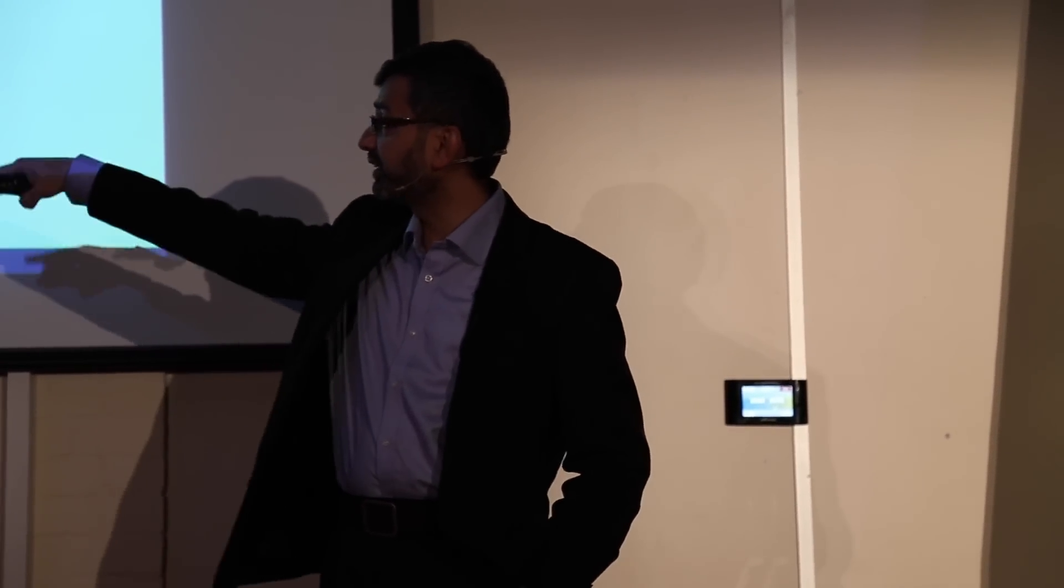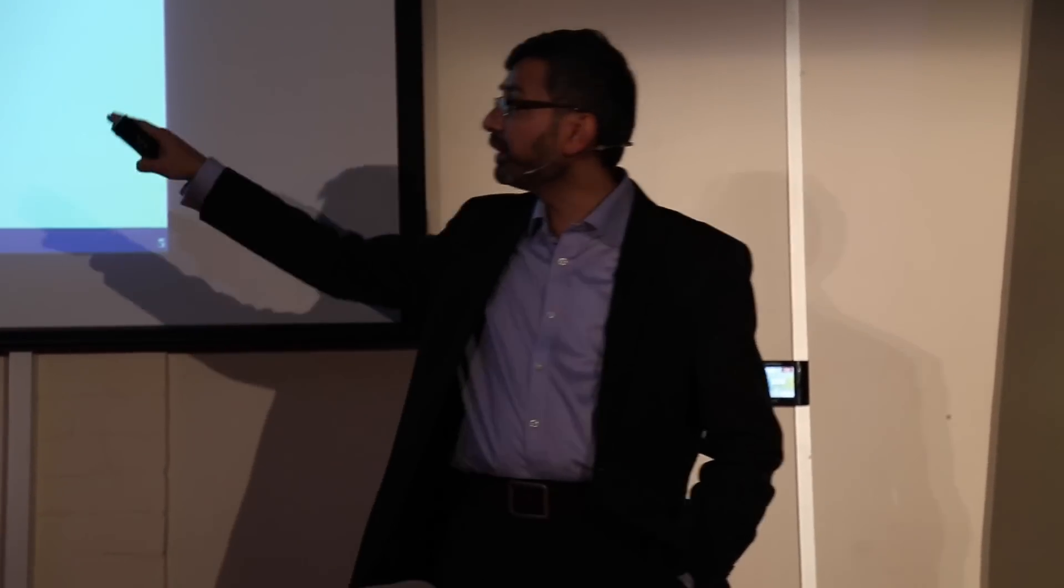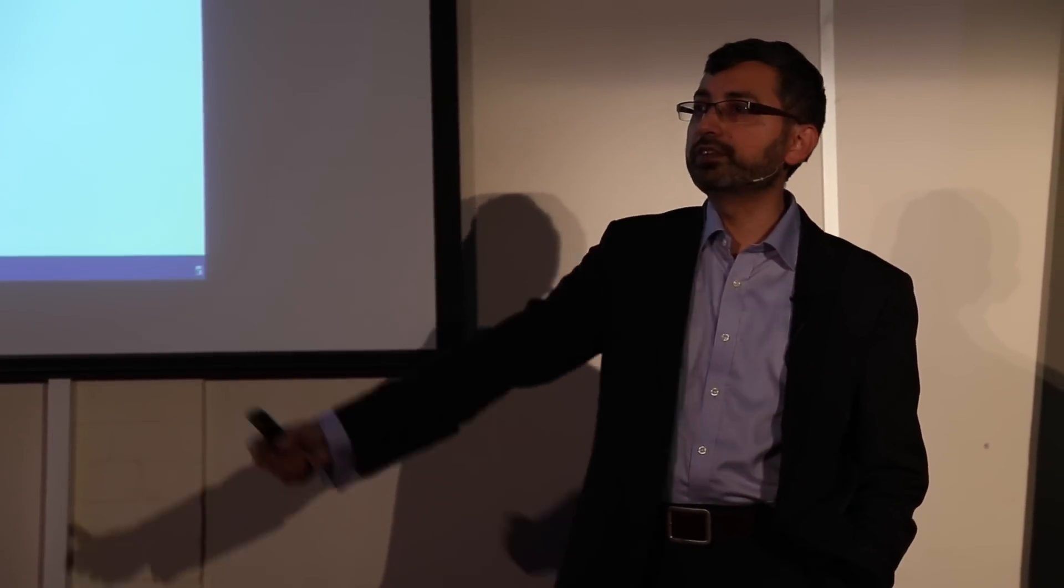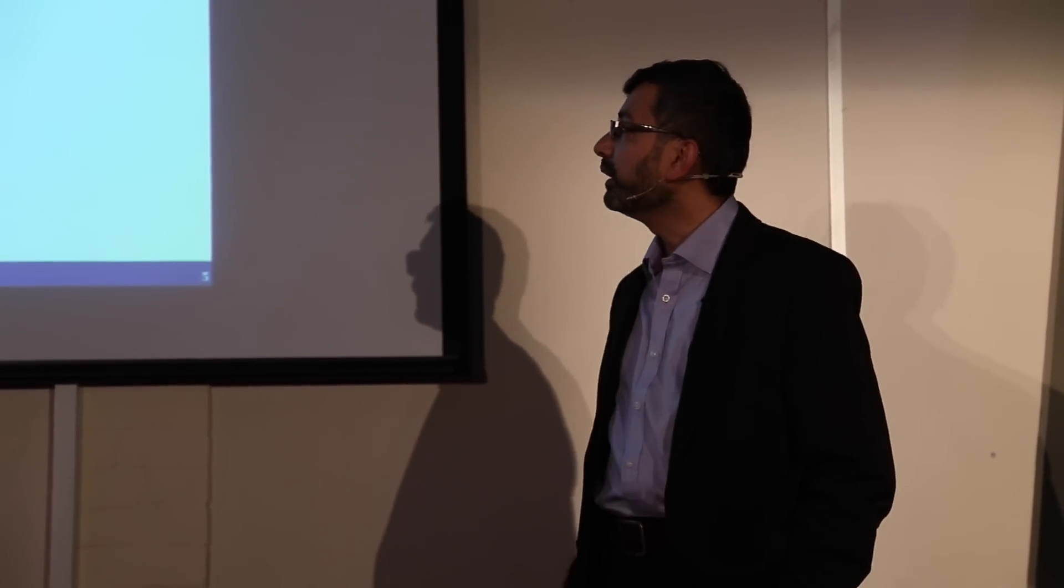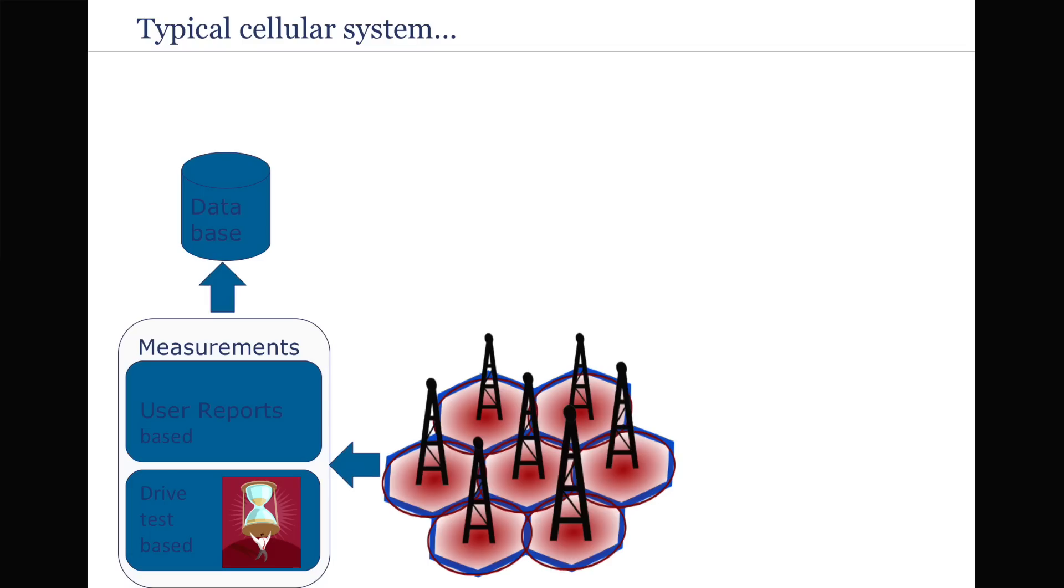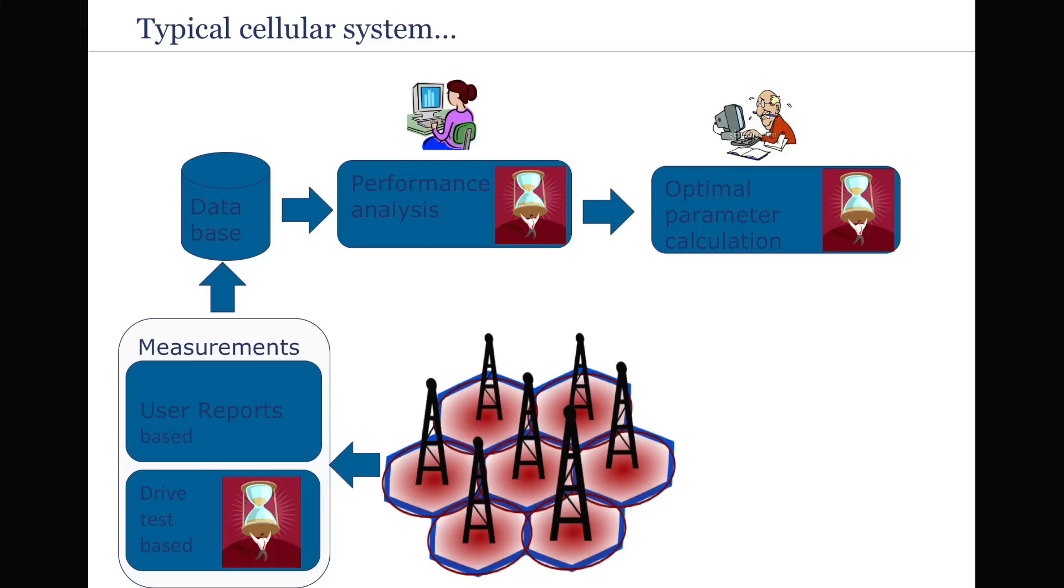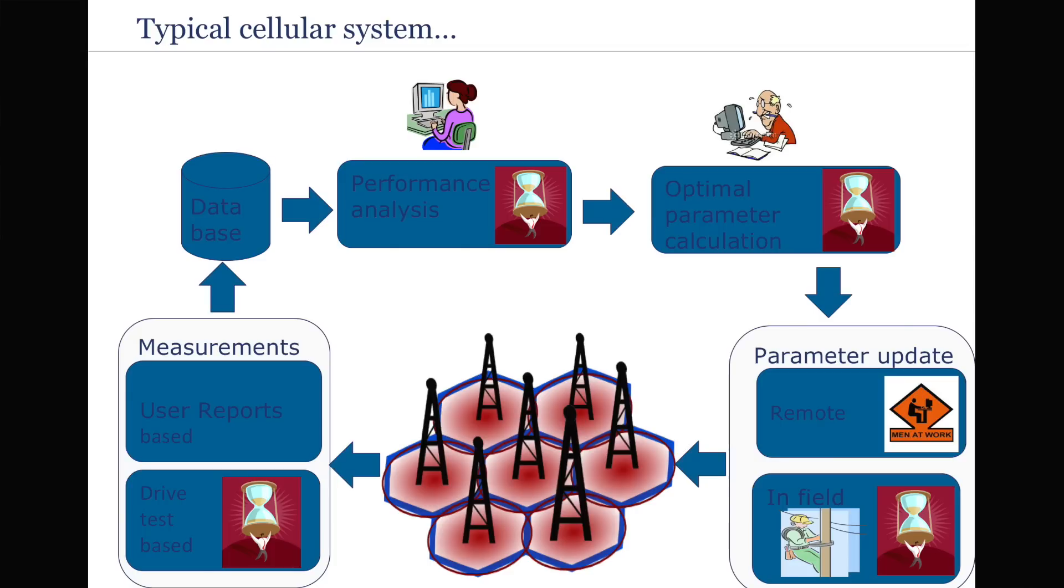In order to do that, we deploy the network. Of course, it's not that symmetrical as it looks in this diagram. But once we have deployed it, either we do drive testing with highly equipped vehicles that we drive along the roads and paths to gather a lot of network parameter statistics or key performance indicators, as well as user reports generated by your mobile phone about their experience of the network. All this information goes into a database where some experts do performance analysis to identify areas of improvement. Then there are some other experts who work very hard to optimize certain parameters in the network, for example the angles of the antennas. These parameters are either directly uploaded to the network or you have to send engineers which rise up on these high towers and adjust the parameters in the network.